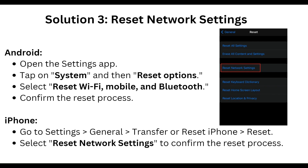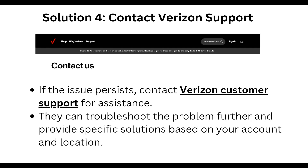To reset network settings on iPhone, go to Settings, then General, then Transfer or Reset iPhone, then Reset. Select Reset Network Settings and confirm the reset process.